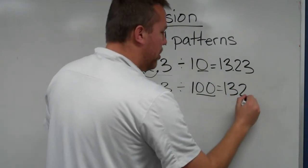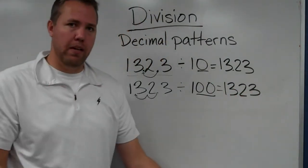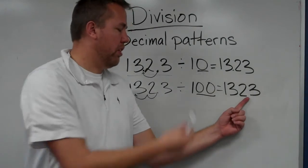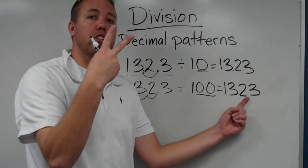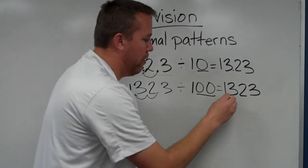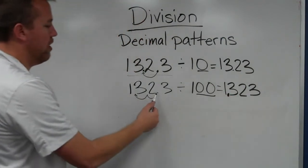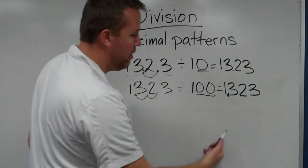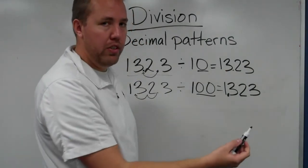The digits in the number remain the same. It just started here, we were dividing by one hundred, therefore two places, two numbers from there, one, two, and we add it in. So 132.3 divided by one hundred is 1.323.